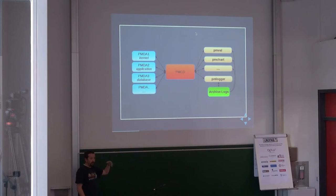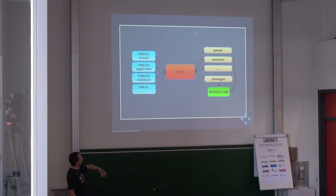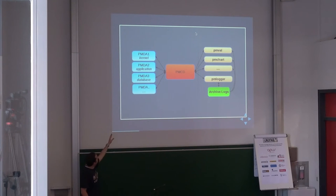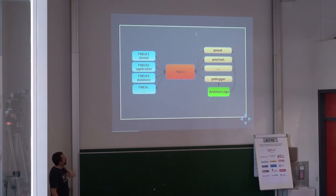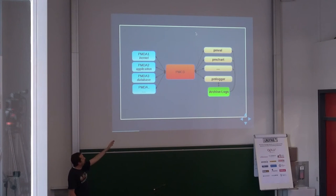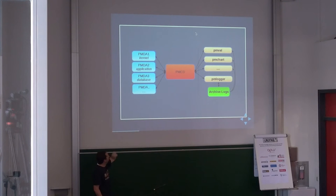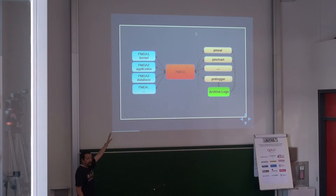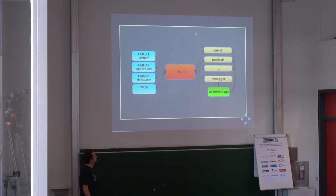PMChart is a GUI that will graph a certain set of metrics that you asked for. On the left side you have PMDAs — plugins — that collect data on behalf of the clients. The workflow is: the client asks the main service, which can be local or remote, for a specific metric. PMCD knows which PMDA is in charge of specific metrics, and those get returned back to the client.